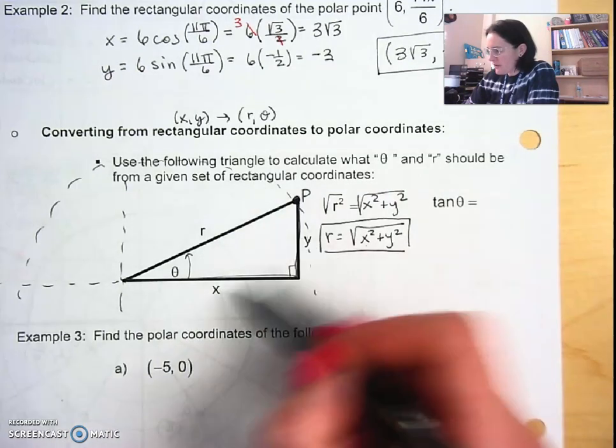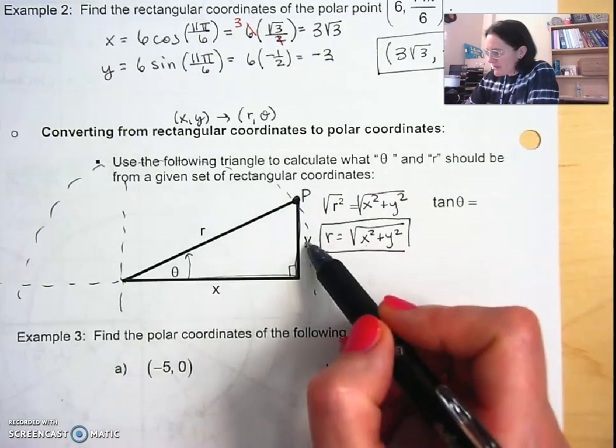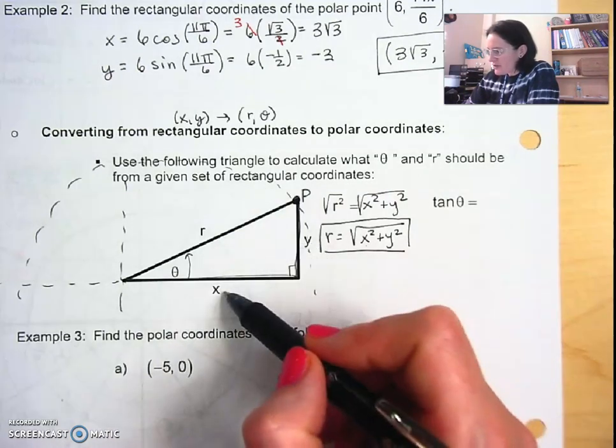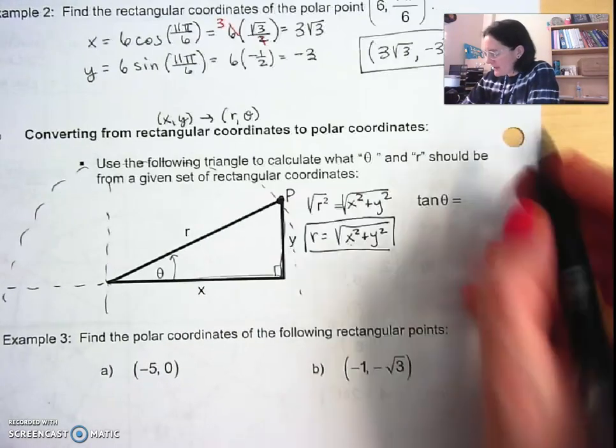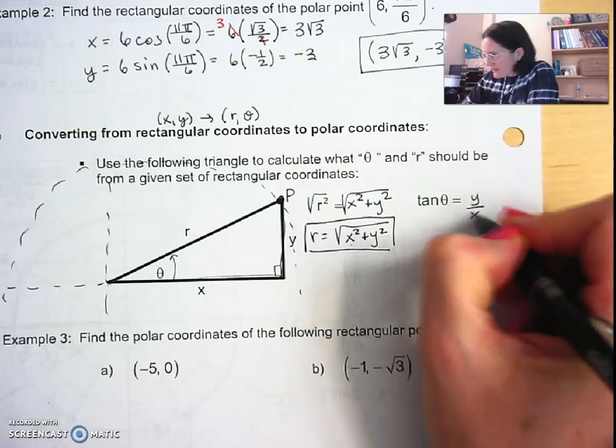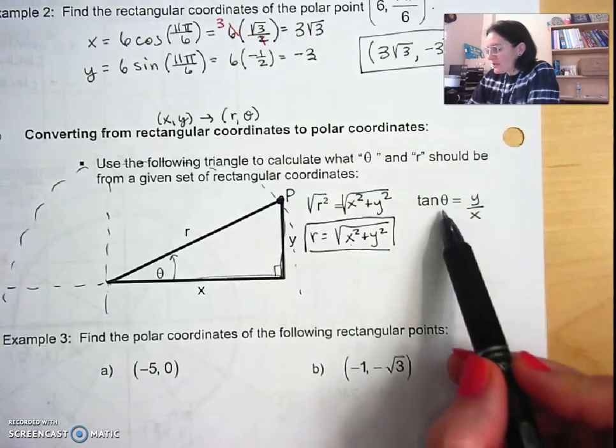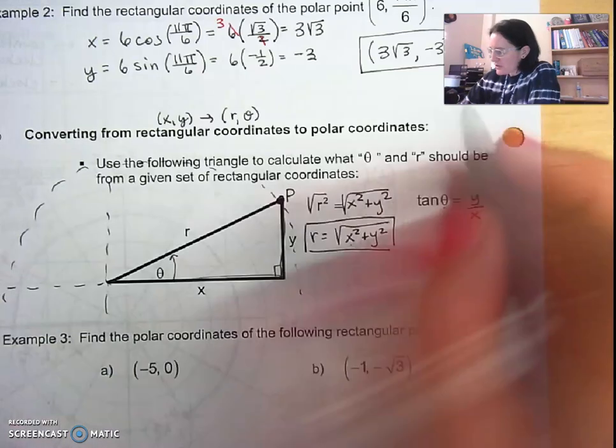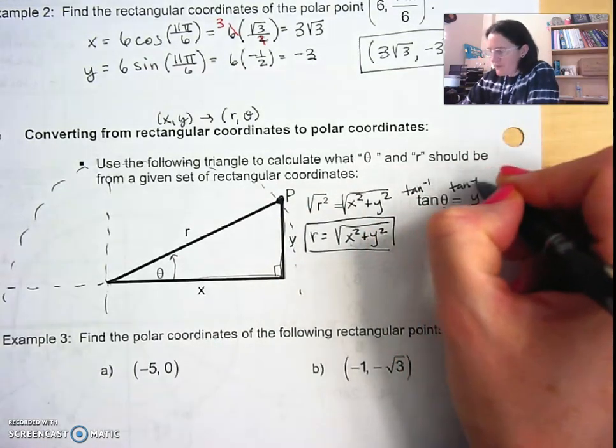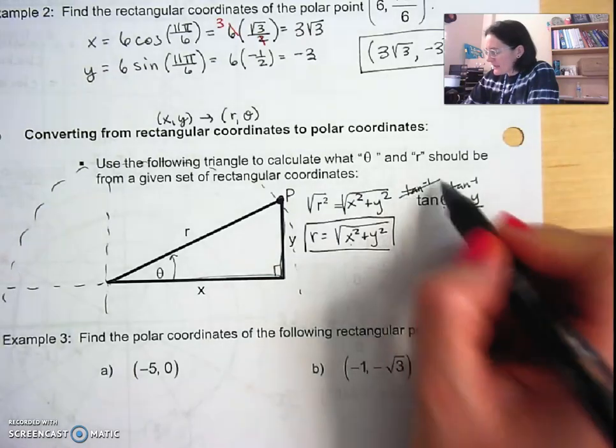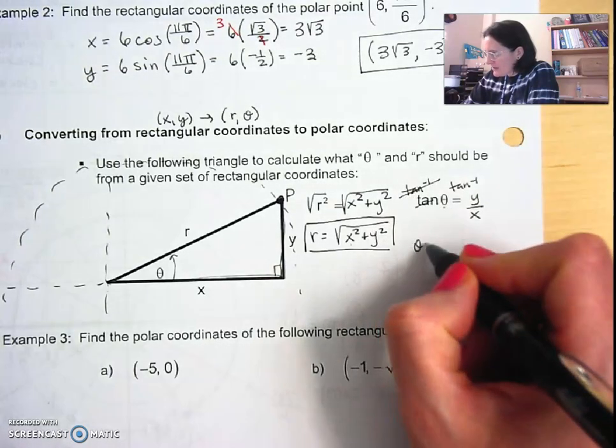And then trying to find theta in terms of x and y that we have already been given, that's the opposite of theta and the adjacent of theta, so we can use the tangent identity for that: y over x. We're trying to actually solve for theta itself, so we just do inverse tan to both sides.